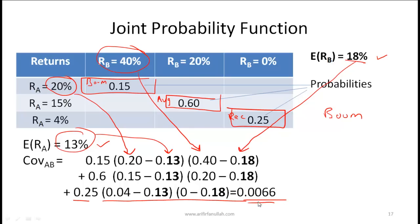The covariance of 0.0066 tells us there is a positive relationship — these two variables generally move together — but the exact meaning of 0.0066 is difficult to interpret.